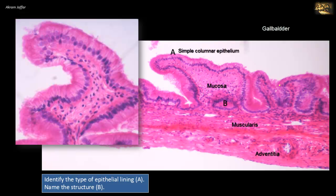Because the gallbladder concentrates bile, it needs a mechanism for absorption, so there are numerous short apical microvilli. These cells closely resemble the absorptive cells of the small intestine, but we do not have goblet cells here. In the non-distended state, the mucosa is thrown up into many folds. These mucosal folds might resemble the villi of the small intestine, but they vary in size and shape, display an irregular arrangement, and disappear when the gallbladder becomes distended.